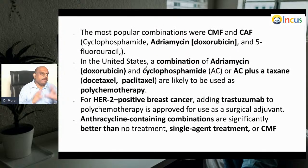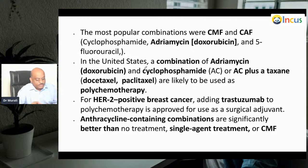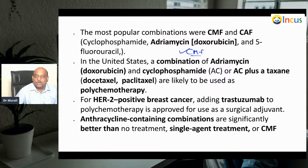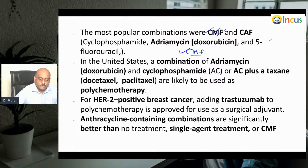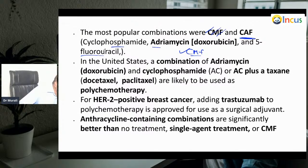A very famous combination known even by undergraduate students is CMF: C for cyclophosphamide, M for methotrexate, and F for 5-fluorouracil. The other regimen is CAF: cyclophosphamide, adriamycin (doxorubicin), and 5-fluorouracil. These are very popular regimens you need to remember.